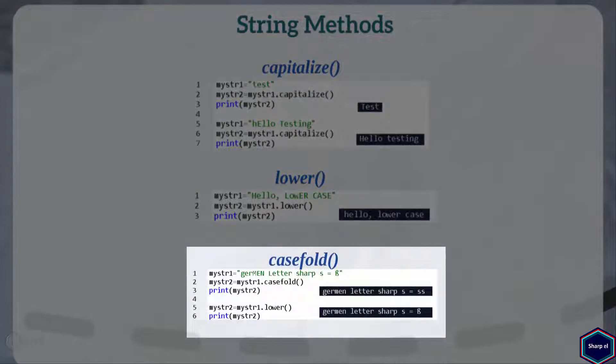The CaseFold method is very similar to the Lower method, but it is more aggressive because it is intended to remove all case distinctions within a string. In German language, the alphabet sharp s can also be written as double s. So if you have German letter sharp s in your string and you call CaseFold method, CaseFold method also converts the German letter sharp s to double s. Whereas when you call Lower method, the German letter sharp s will not be converted to double s.